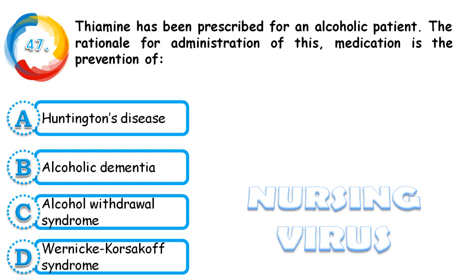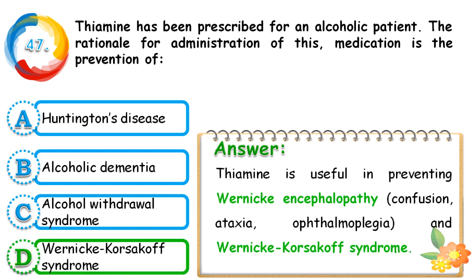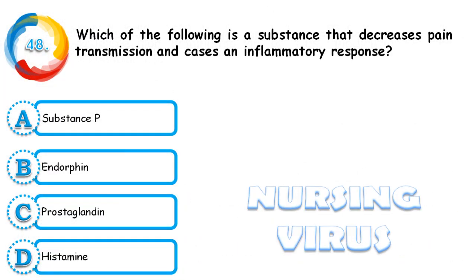Question 47: Thiamine has been prescribed for an alcoholic patient. The rationale for administration of this medication is to prevent Huntington's disease, alcoholic dementia, alcohol withdrawal syndrome, or Wernicke-Korsakoff syndrome. The correct answer is Wernicke-Korsakoff syndrome. Thiamine is useful in preventing Wernicke encephalopathy — avoiding symptoms of confusion, ataxia, and ophthalmoplegia — as well as Wernicke-Korsakoff syndrome.